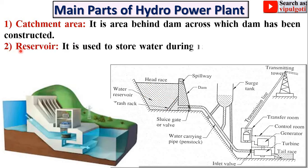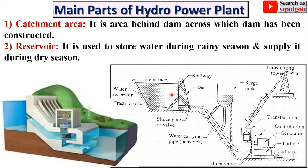Next part: reservoir. Here you can see a reservoir — this one is called the reservoir. It is used to store water during the rainy season and supply it during the dry season. So it is one type of water storage.